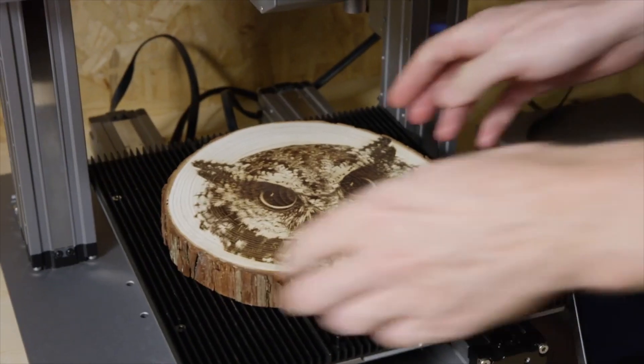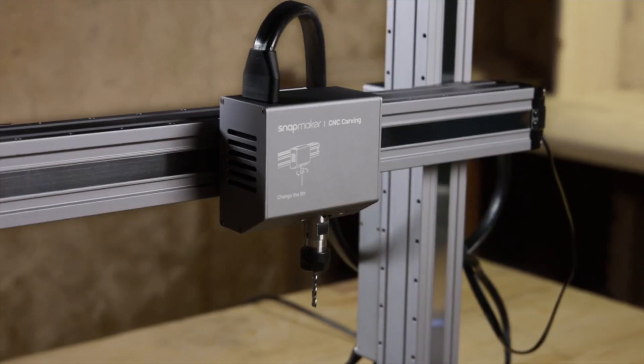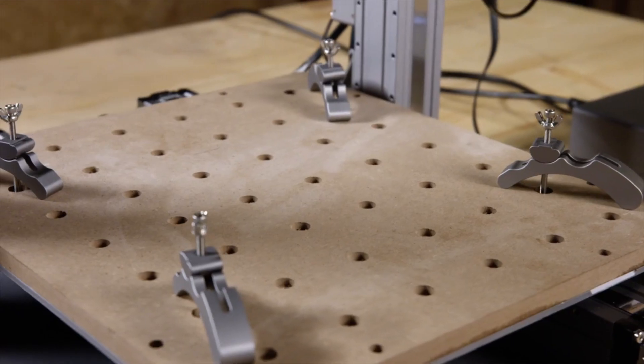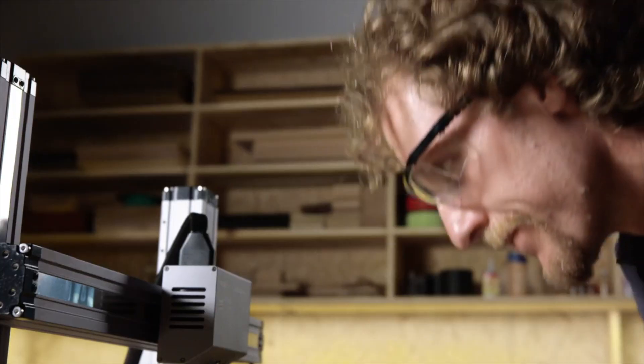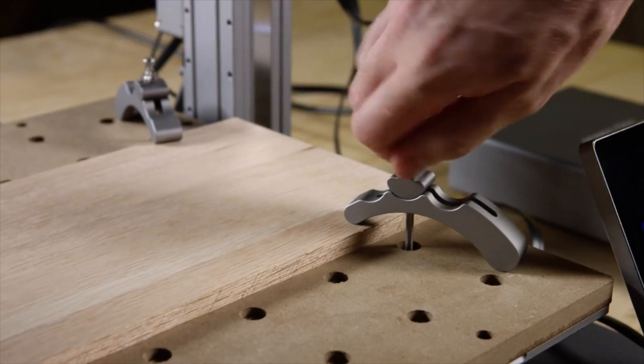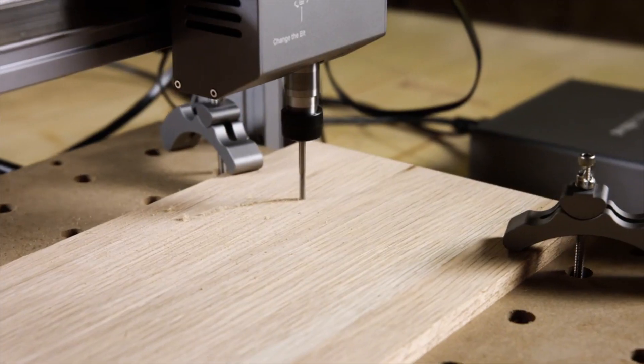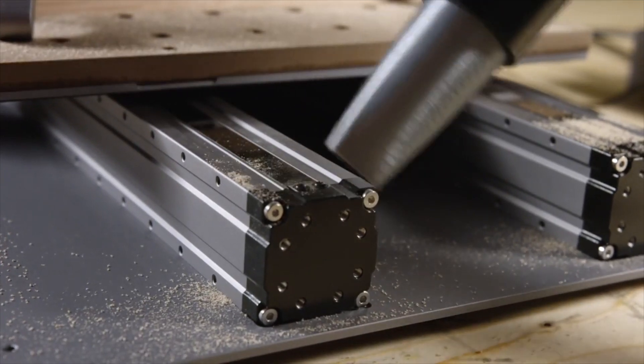For CNC carving it now features a fully upgraded CNC module and waste board. It supports over 100 carving and cutting bits by using the standard ER11 collet. Upgraded clamps provide a tighter hold. It has faster working speed, a larger step down and fully enclosed linear modules.